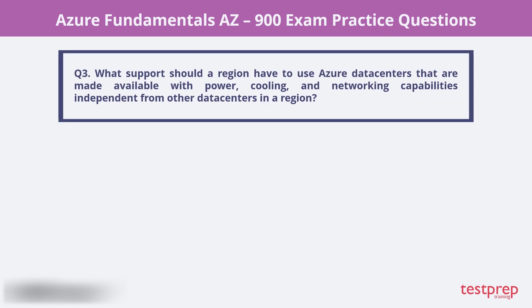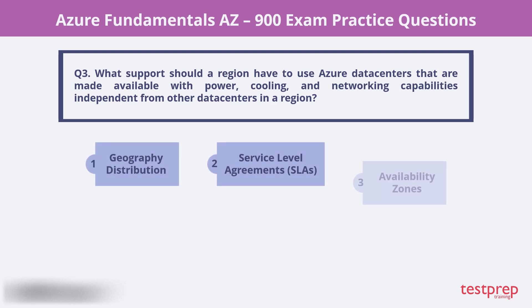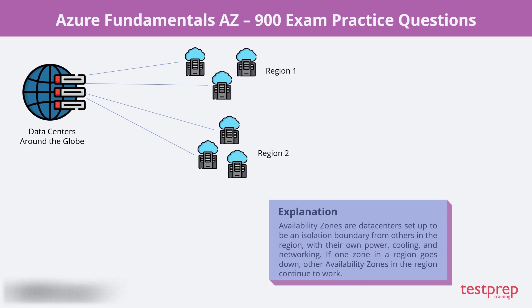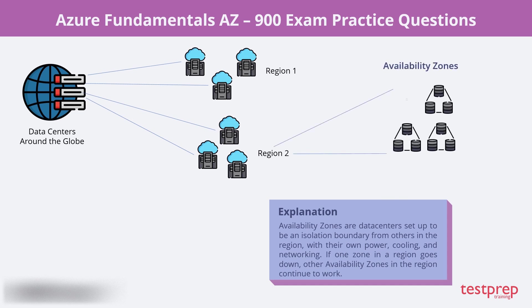Question 3. What support should a region have to use Azure data centers that are made available with power, cooling, and networking capabilities independent from other data centers in a region? Is it geographical distribution, service level agreements, or availability zones? The correct answer is availability zones. Availability zones are data centers set up to be an isolation boundary from others in the region, with their own power, cooling, and networking. If one zone in a region goes down, other availability zones in the region continue to work.